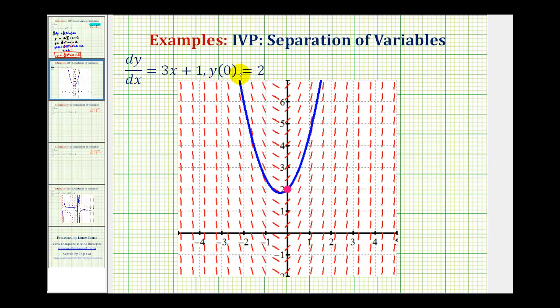But notice if we know y of zero equals two, that means our function, or the particular solution, must contain the point zero, two, or this point here. And therefore, our particular solution would be this blue function here, which is the particular solution that we found as the solution to this problem.